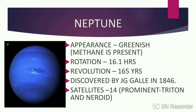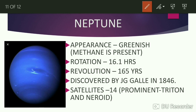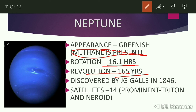Next and last but not the least is Neptune. Neptune appears greenish because it has methane present on it. The rotation time taken by Neptune is 16.1 hours. Revolution time taken by Neptune is 165 years. It was discovered by Johann Galle in 1846. Total number of satellites of Neptune are 14. Prominent satellites are Triton and Nereid.